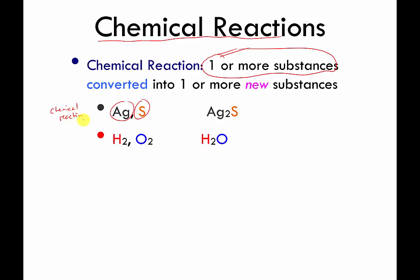Here's another example of a chemical reaction. I have a bunch of H2 molecules — that's two H's stuck to each other — and a bunch of O2 molecules, also two oxygens stuck to each other. I do some magic and turn them into water: I rearrange the attachments so that two H's are stuck to one oxygen. Another example of a chemical reaction.